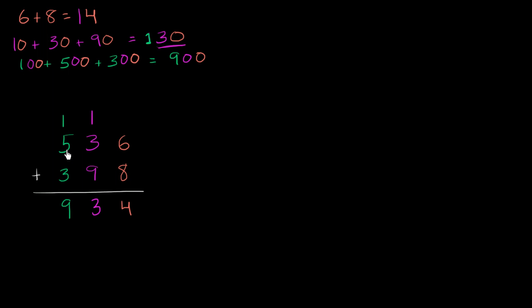So this 5 is in the hundreds place, so it really represents five hundreds, or 500. 3 represents three tens, because it's in the tens place, so it represents 30. And the 6 just represents six ones, or six.